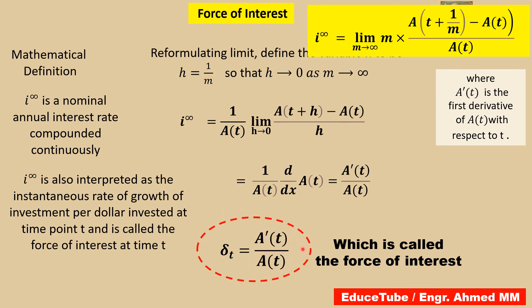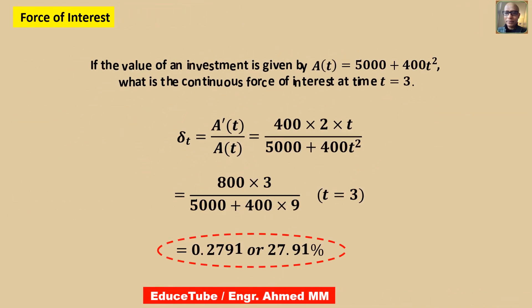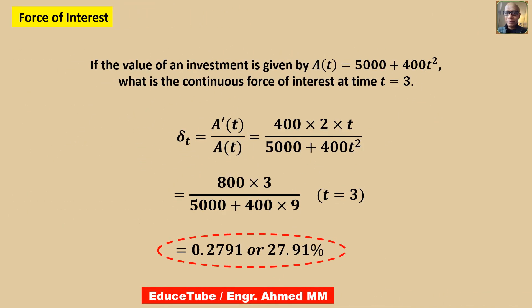Now we will use this in the next example. If the value of investment is given by A(t) = 5000 + 400t², what is the continuous force of interest at time t = 3? We already got this formula in the previous slide.